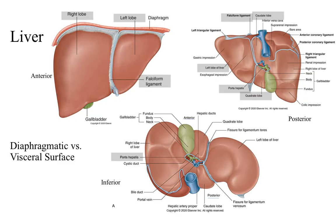The liver can be considered a gland because of the substances it secretes — it's technically the largest gland in the body. It's one of the largest organs in the body and it has four lobes: the right lobe, the left lobe, and then on the back side we can see the quadrate lobe, which has a quadrangular shape, and the caudate lobe. Caudate means towards the back or towards the tail, so it's a little piece towards the tail that is kind of an extension of the right lobe of the liver.